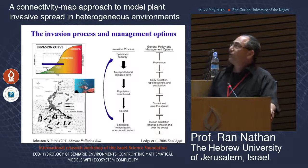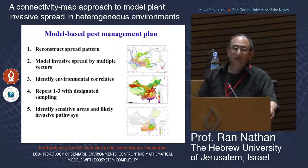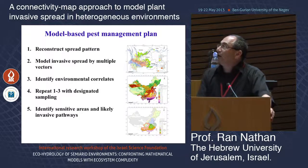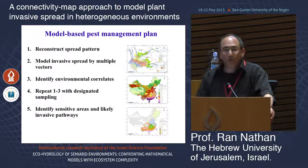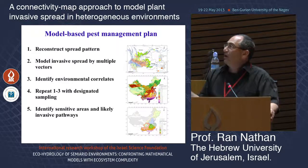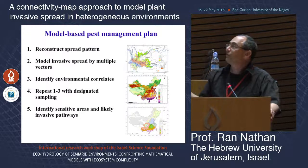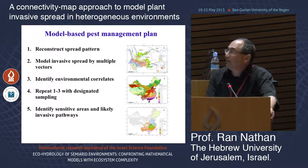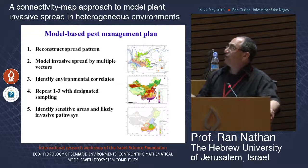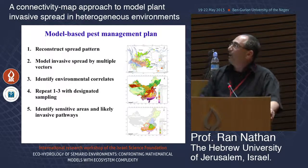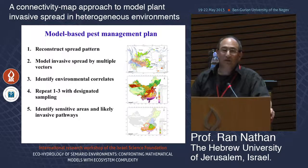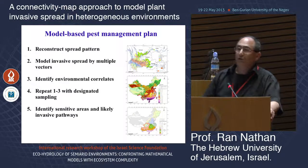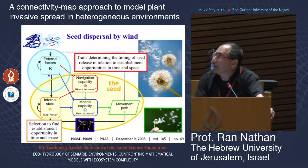For a model-based management plan, we want to reconstruct the historical spread and model spread that is mediated by multiple vectors rather than a single one — a growing recognition in seed dispersal research. We also want to identify environmental correlates for this spread, repeat these steps using field sampling data rather than just literature, and then identify sensitive areas and likely invasive pathways in order to guide management plans.